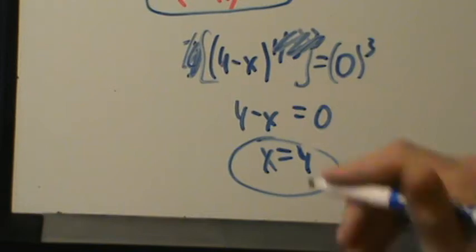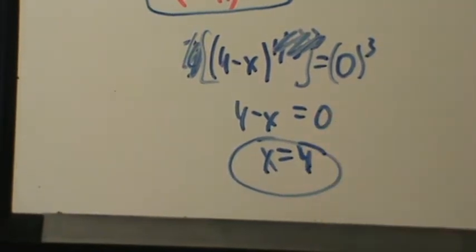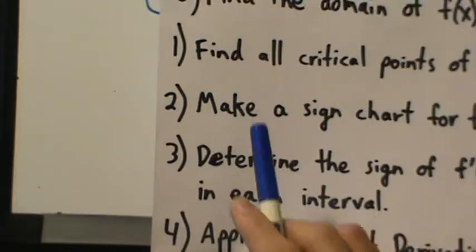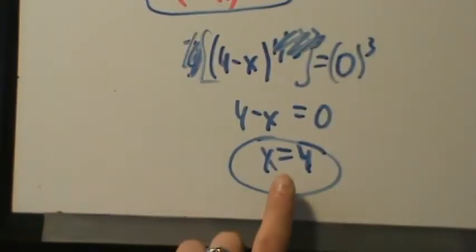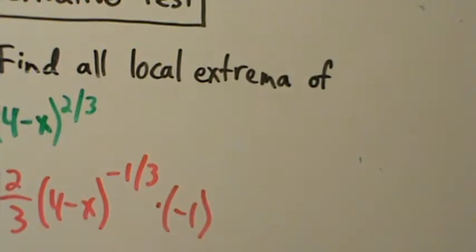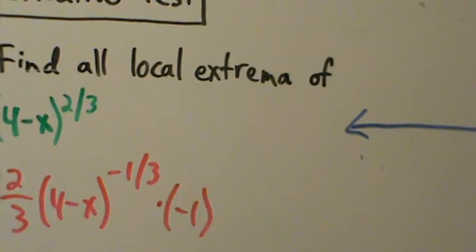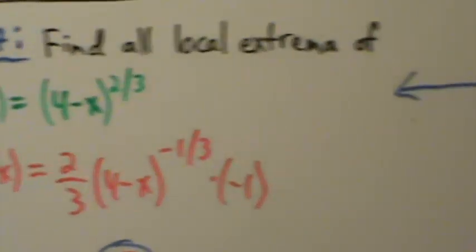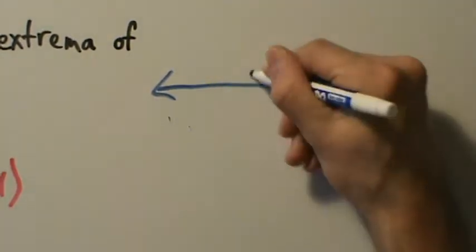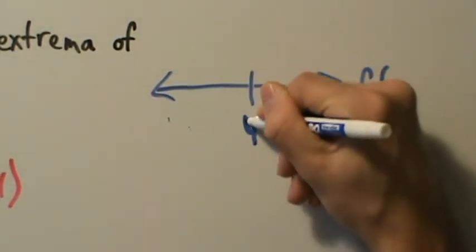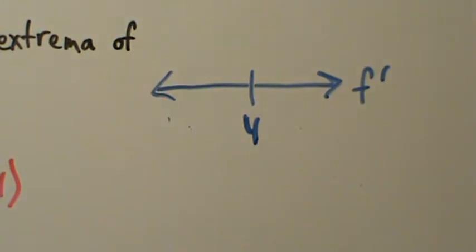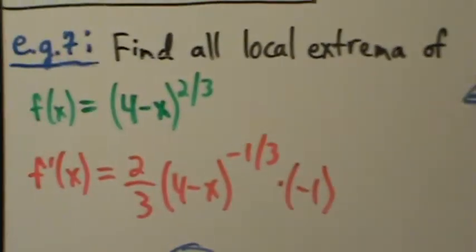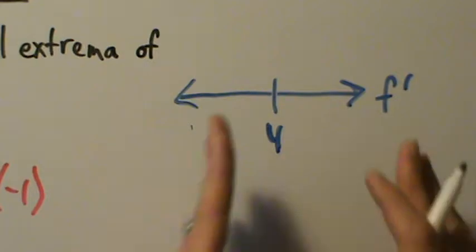Step two: make a sign chart for the derivative. Our sign chart is labeled f prime and we place four on it, since four is our only critical point. There are no domain restrictions on f, so we don't need to cut the number line off anywhere. The two intervals are negative infinity to four, and four to infinity.